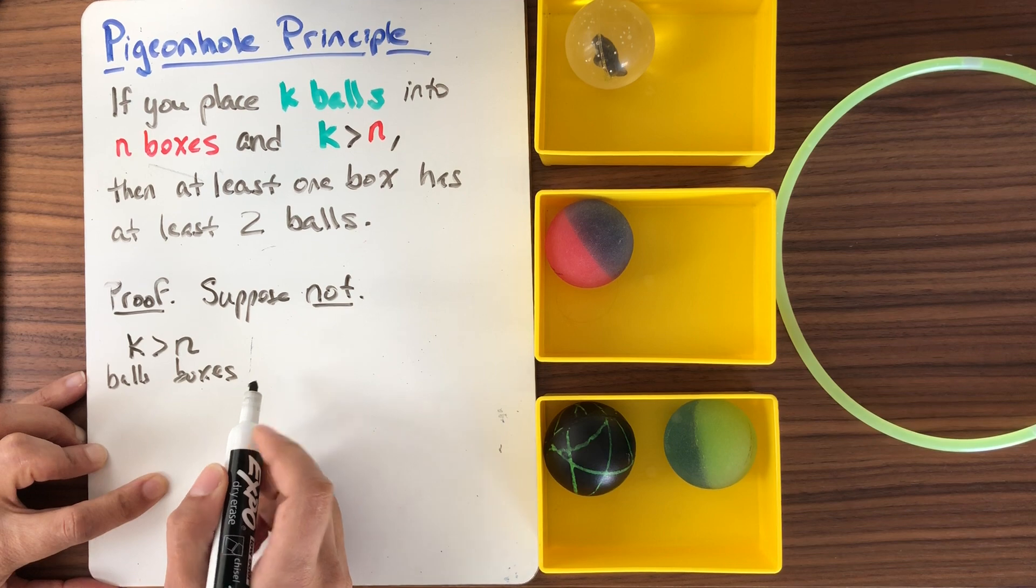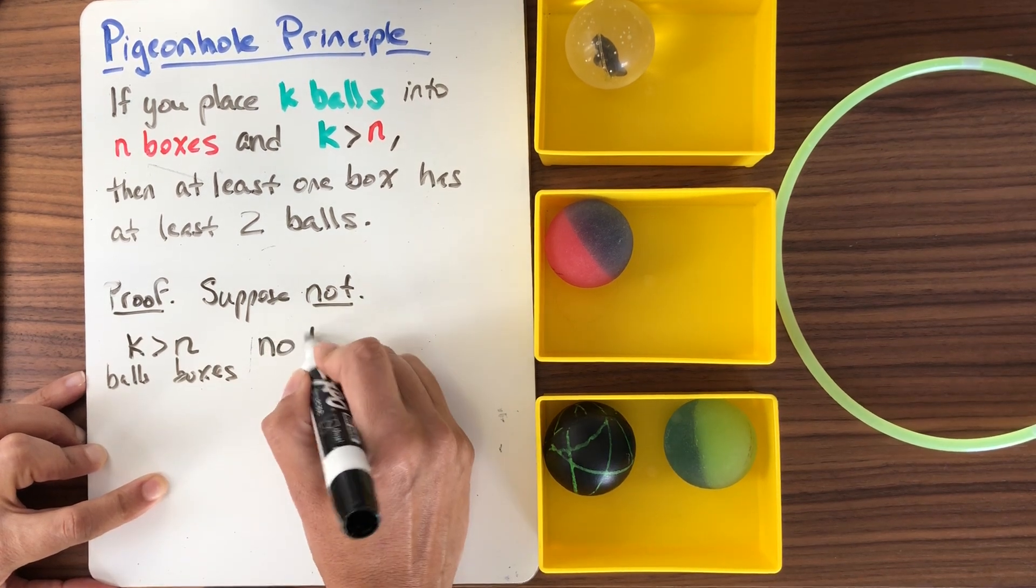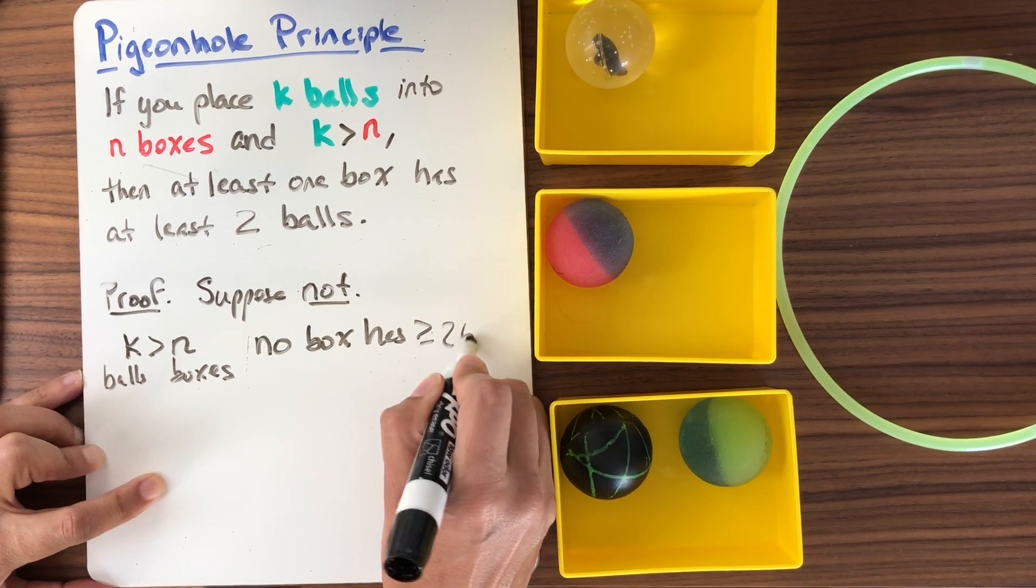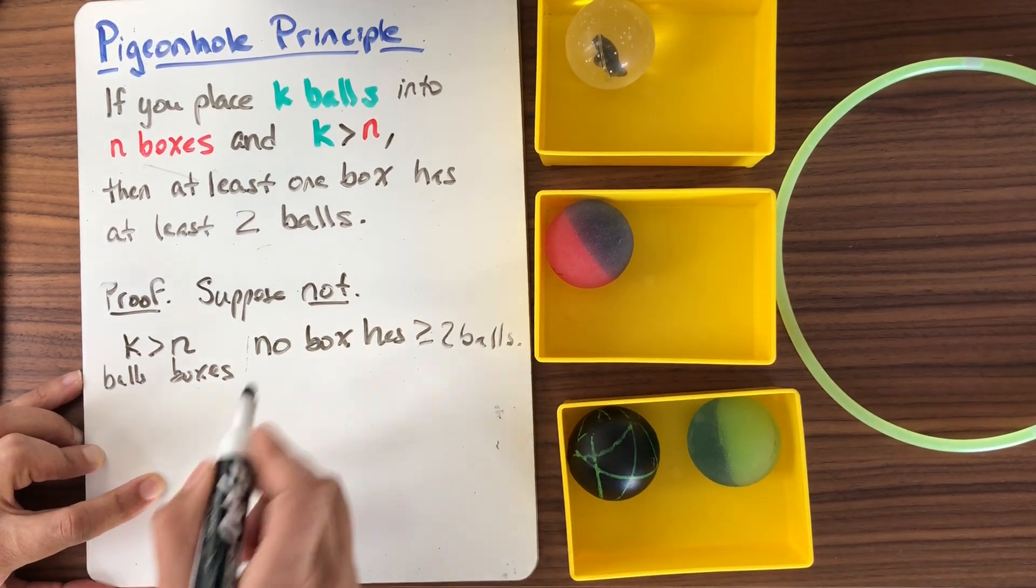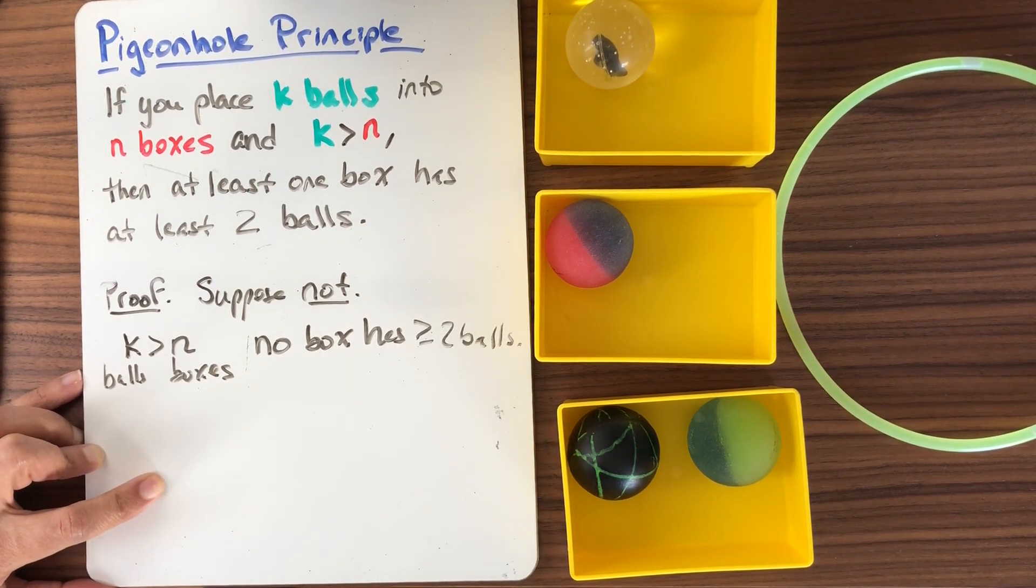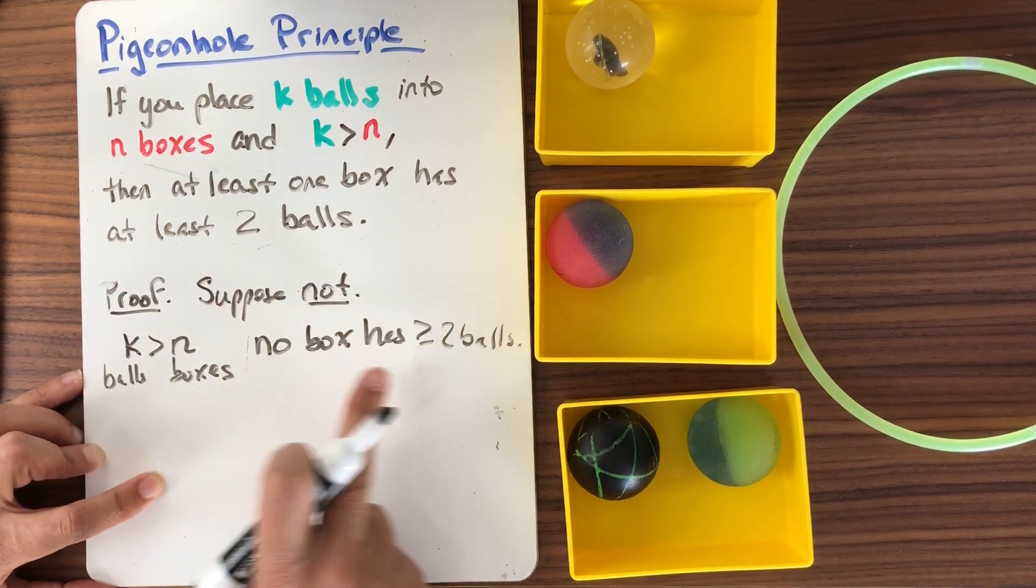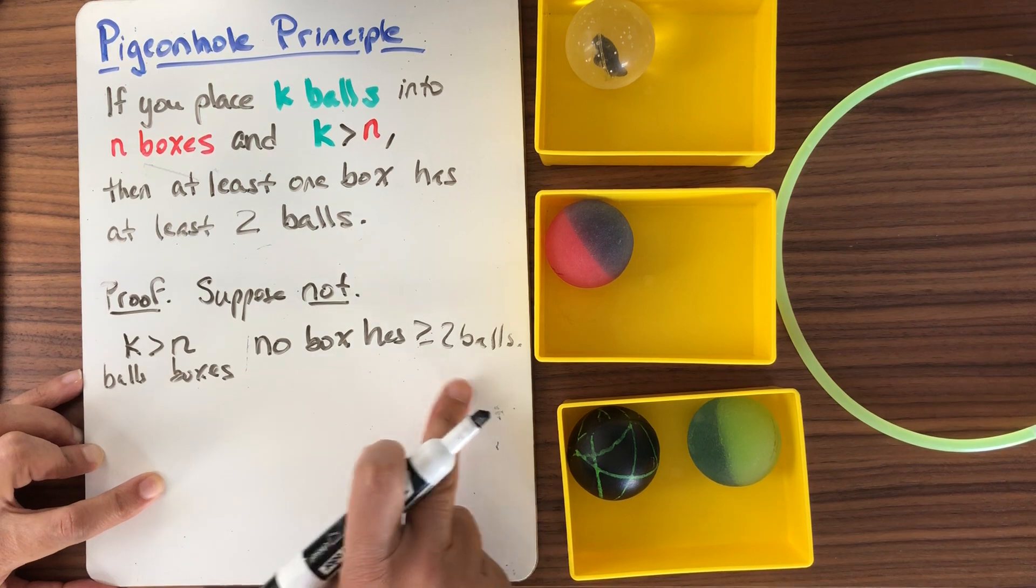So I'm going to do this and no box has greater than or equal to two balls. That's what it would mean to be not. At least one becomes no box has at least two balls. So no box has at least two balls.